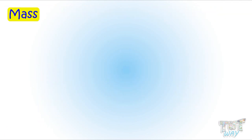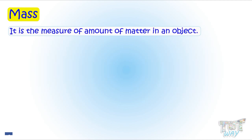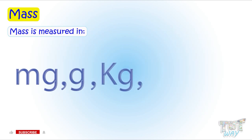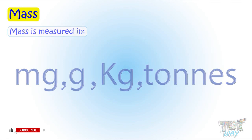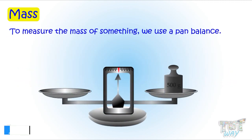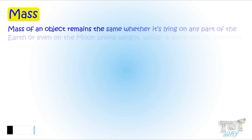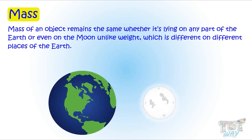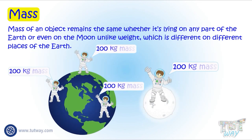Mass is the measure of the amount of matter in an object. Mass is measured in milligrams, grams, kilograms, and tons. To measure the mass of something, we use a pan balance. The mass of an object remains the same whether it is on any part of the Earth or even on the Moon, unlike weight, which is different in different places.